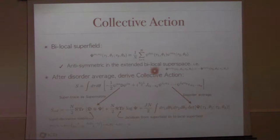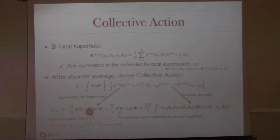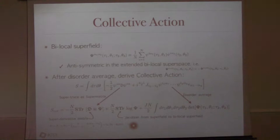Using this bilocal superfield formulation, I can express our path integral in terms of this field and obtain the collective action. This is similar to the Schwinger-Dyson relation with sigma and G. The first term comes from the kinetic term using the super derivative matrix, the second term comes from the Jacobian factor, the third term comes from disorder averaging, and the determinant is a Q-by-Q matrix determinant.